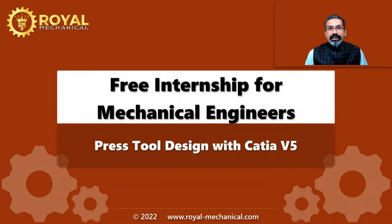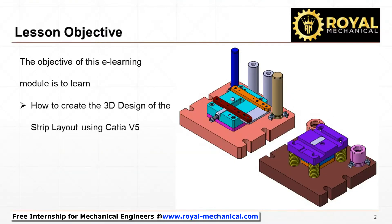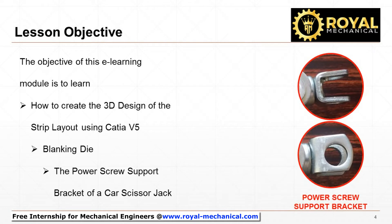Welcome. In this e-learning module, I shall demonstrate and make you understand how to create the 3D design of the strip layout using CATIA V5 for the blanking die of the power screw support bracket of a car scissor jack.